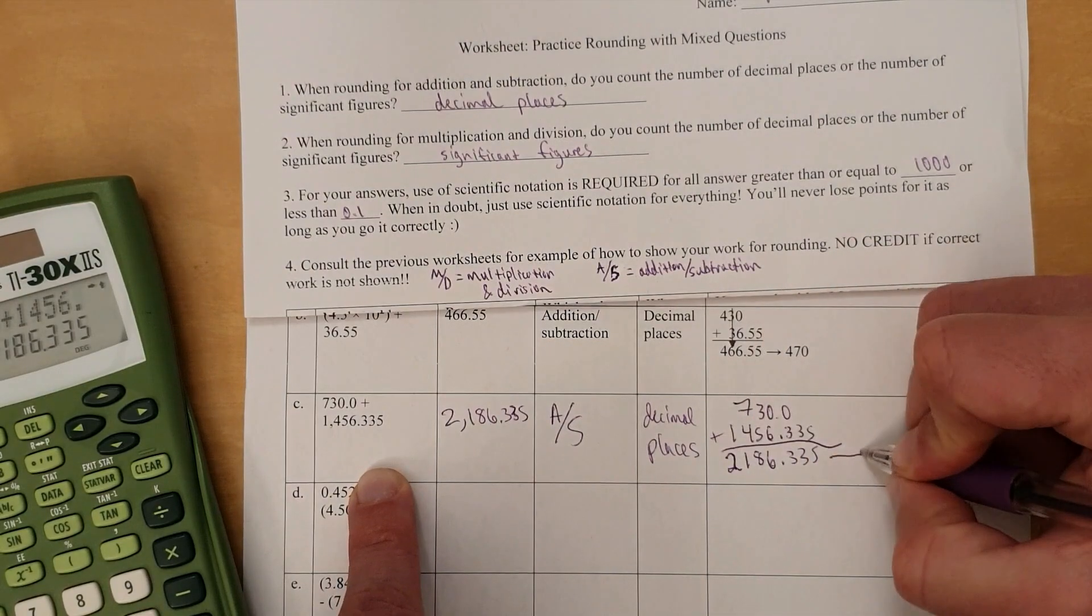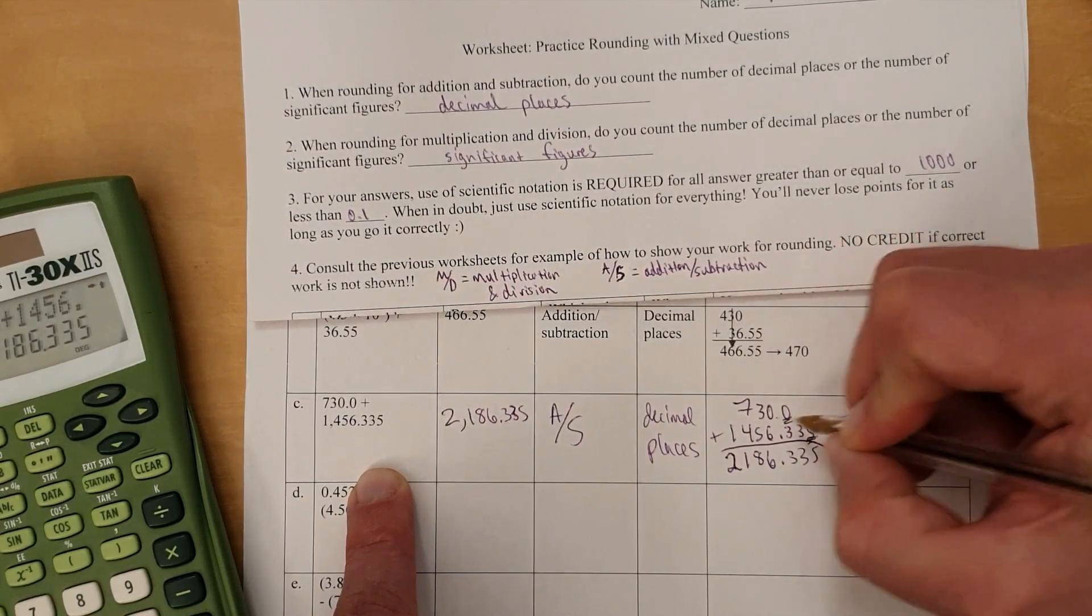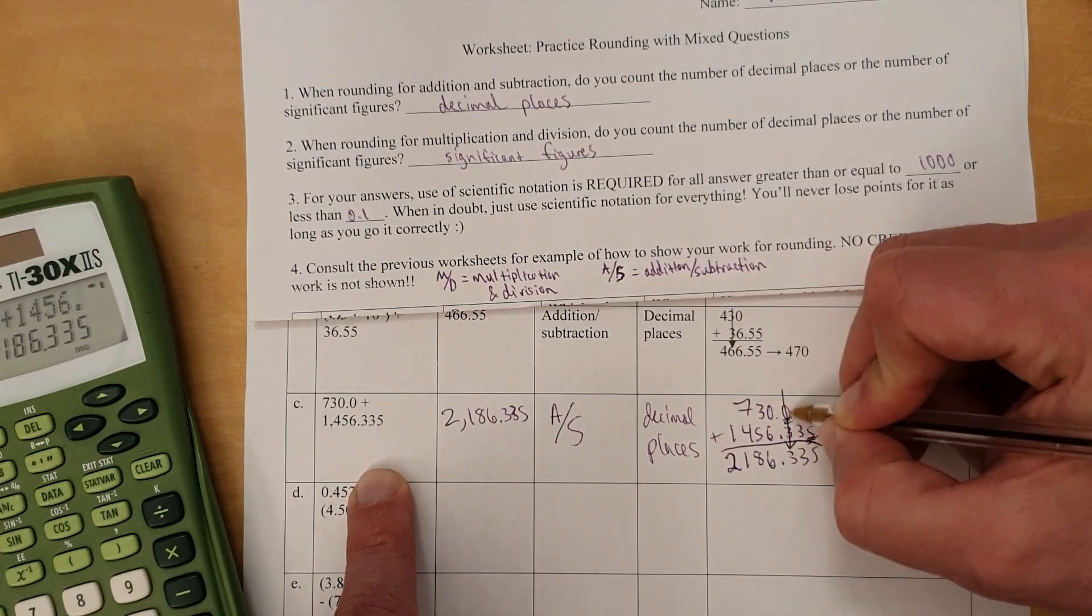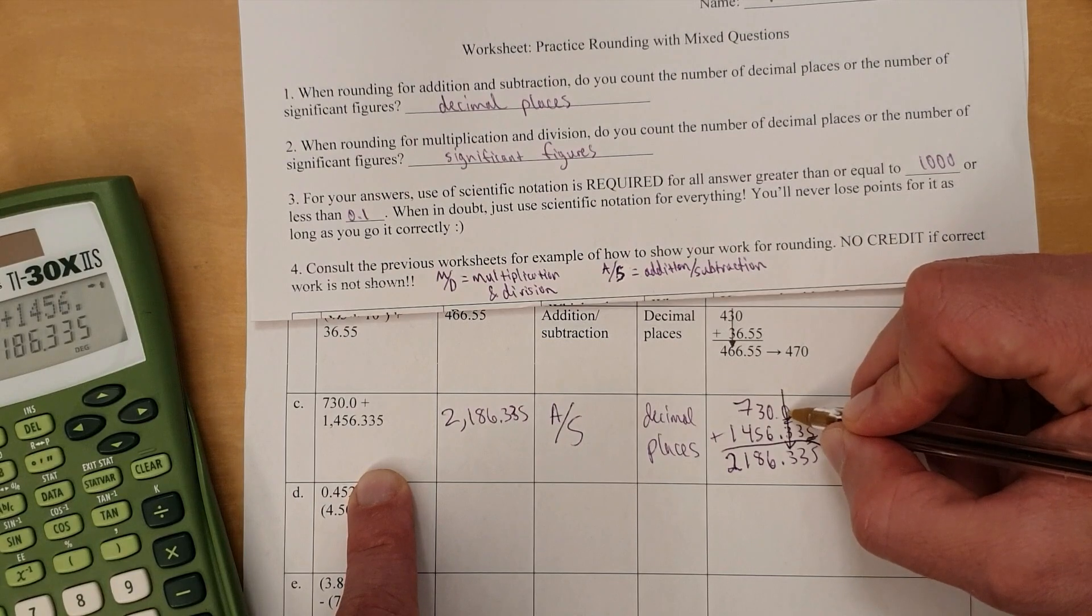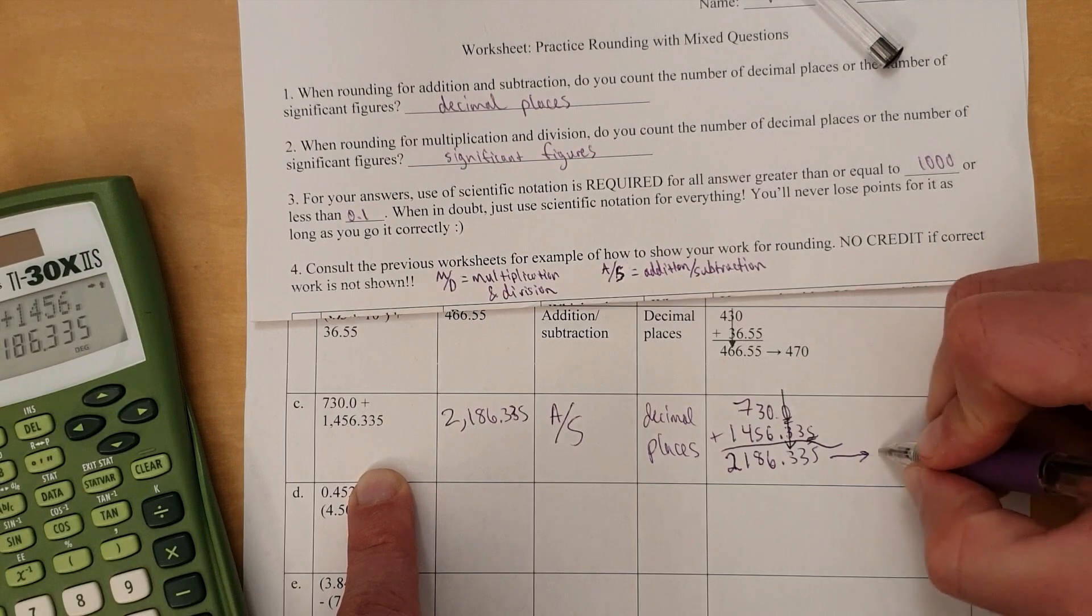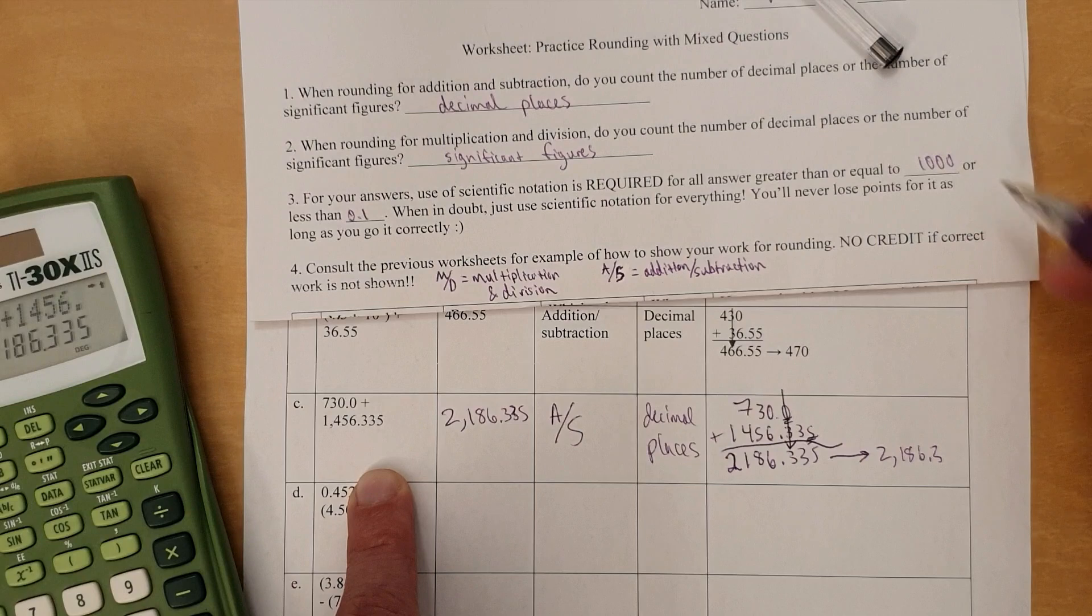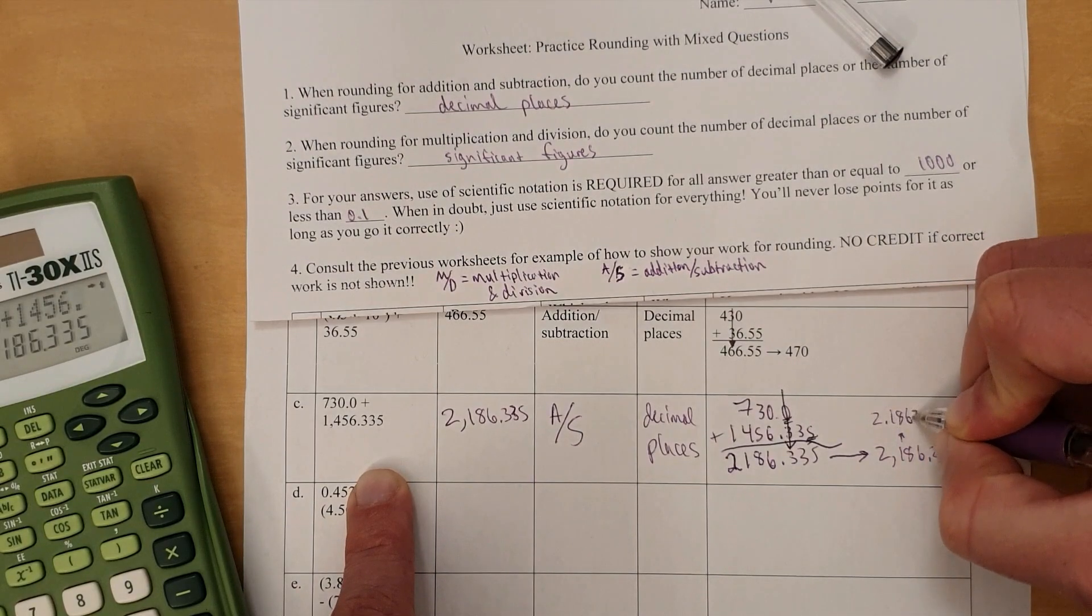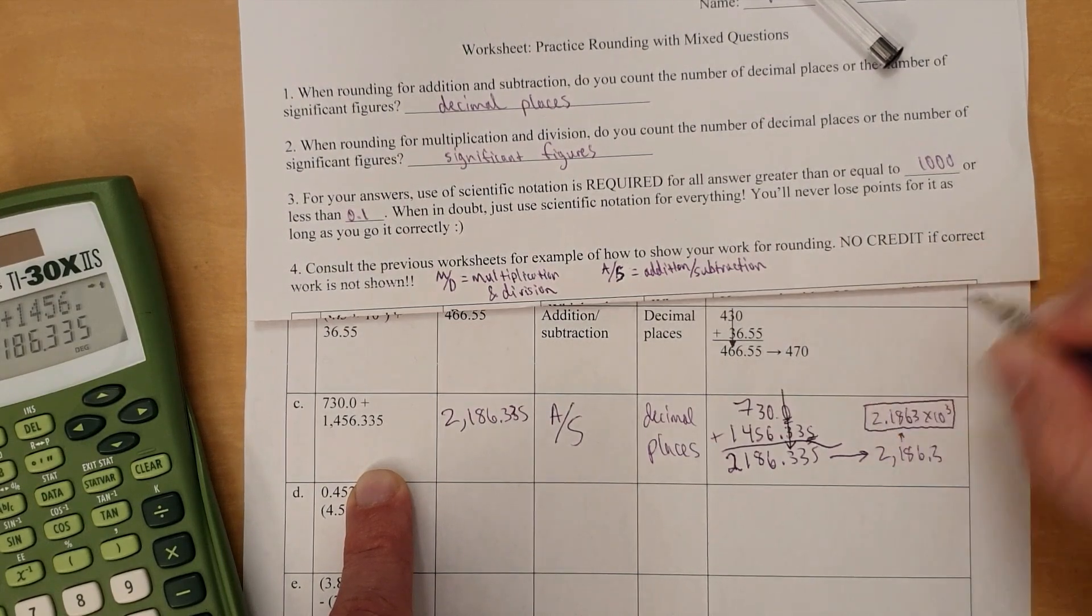All right, we got to round that. Count decimal places. Last sig fig here for the top number. Last sig fig here for the bottom number. This one is first to the left, so it determines where we round because it's the least exact number, the one with this last sig fig furthest to the left. So less exact means we use this one to round right here where that 3 is, which means it becomes 2,186.3. And since it's over 1,000, you have to use scientific notation. So it's 2.186 times 10 to the third. That's our answer.